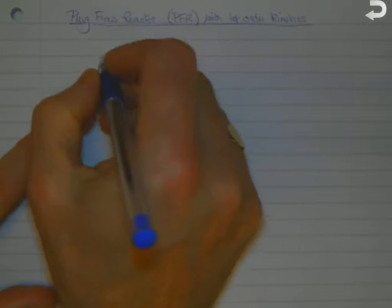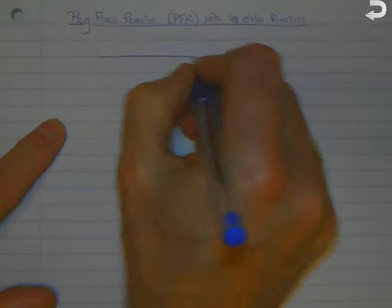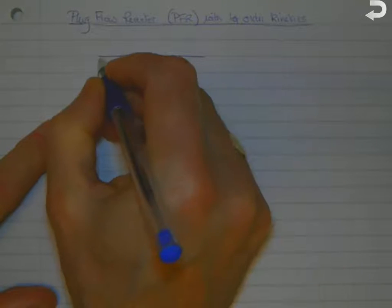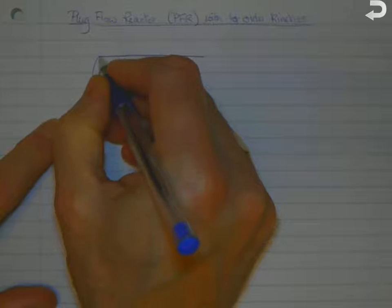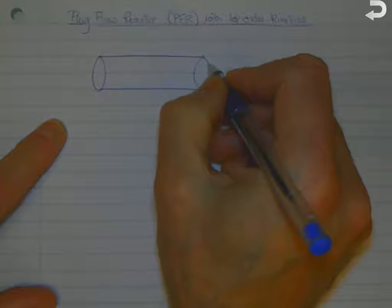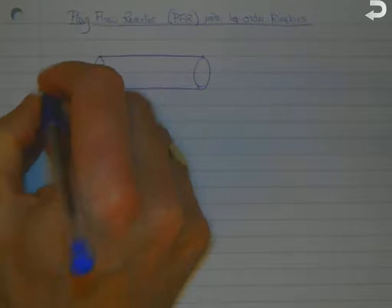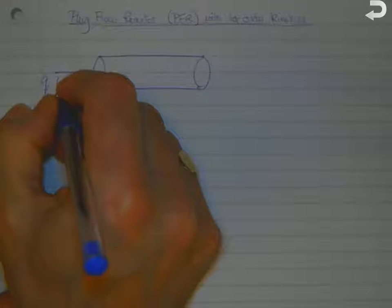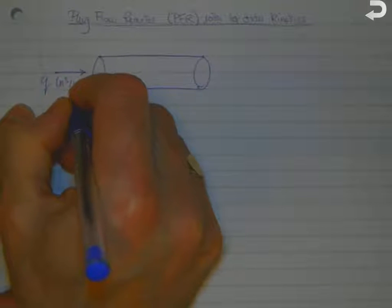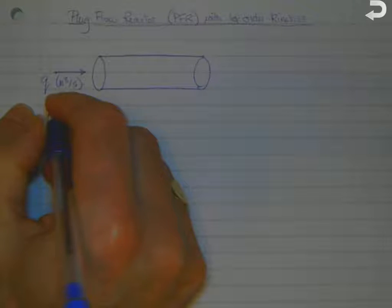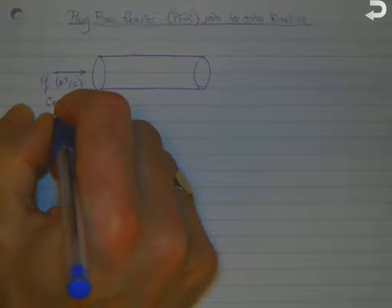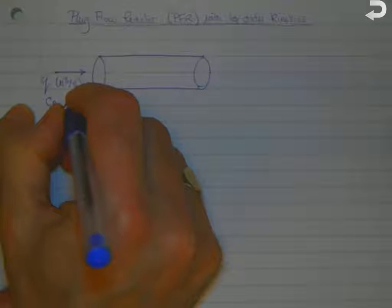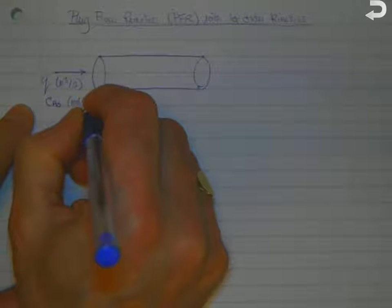Right, let's consider the case of a plug flow or tubular flow reactor with first-order kinetics. So we've got a tube here with flow rate, volumetric flow rate of Q meters cubed per second, and an inlet concentration of our starting component A of C_A naught moles per cubic meter.